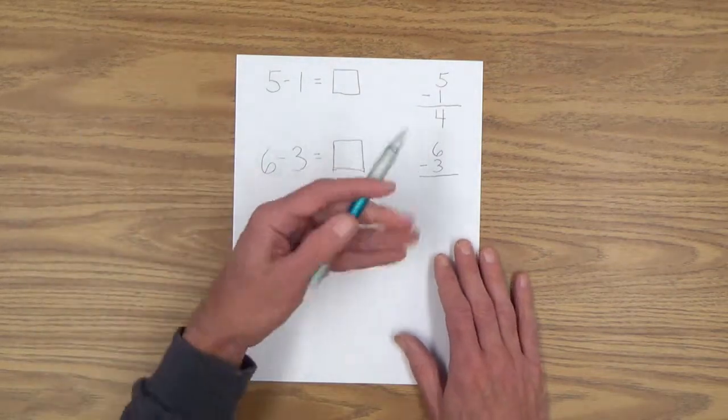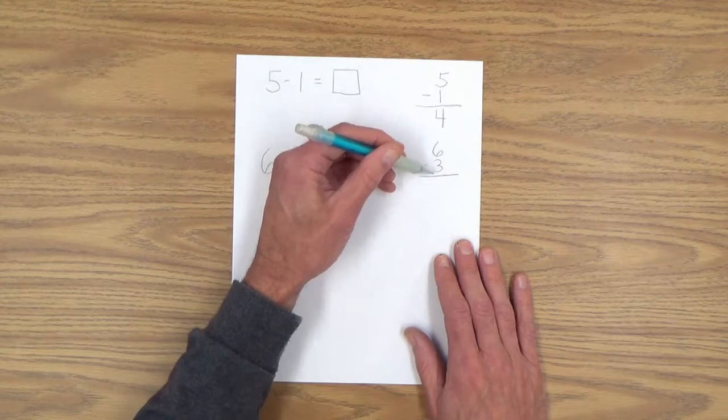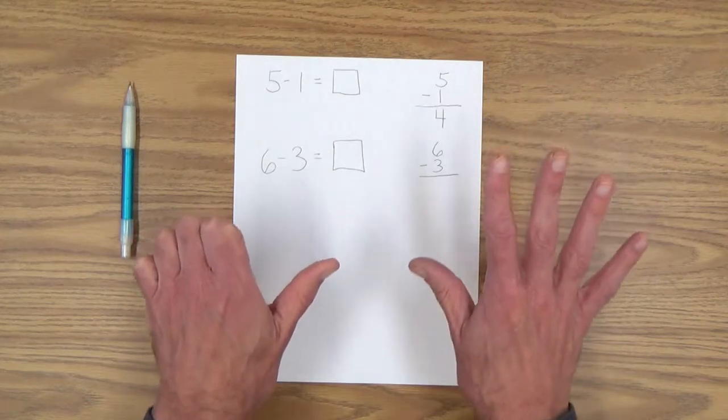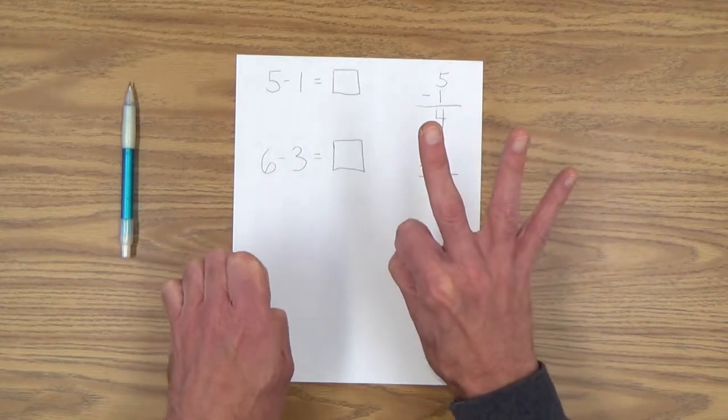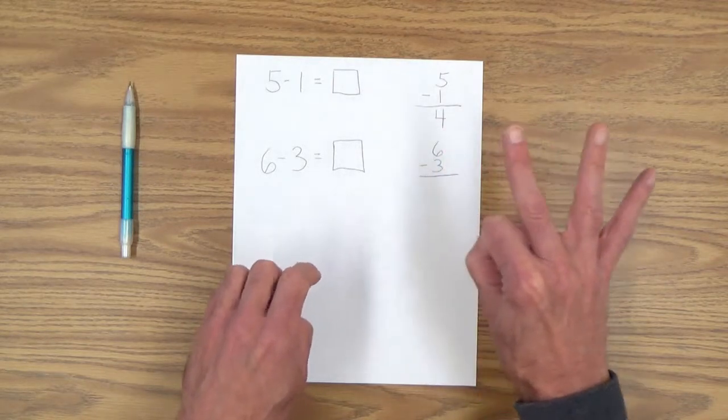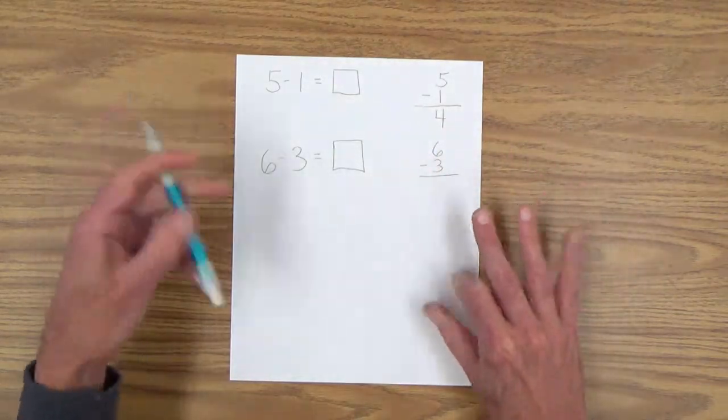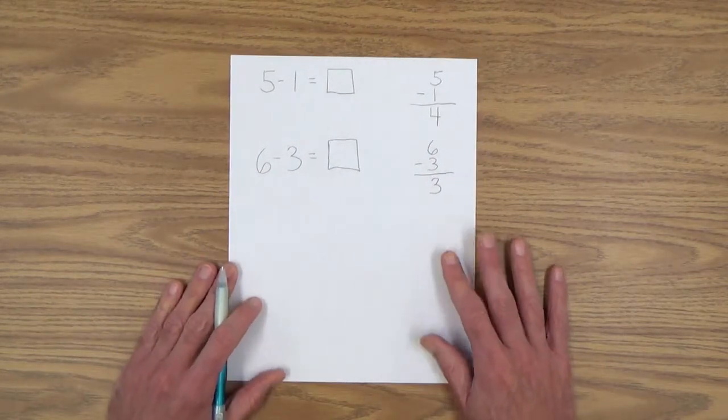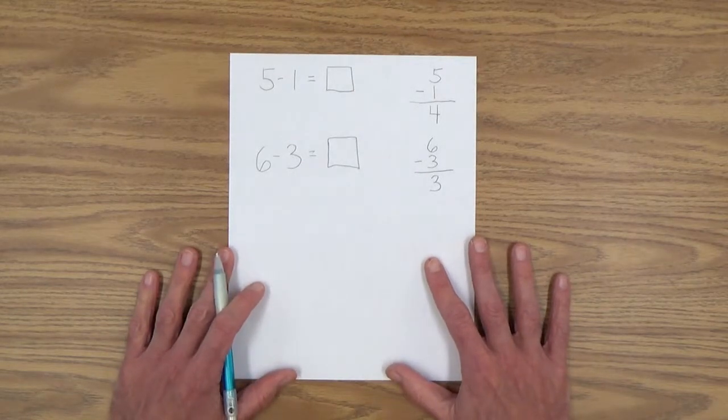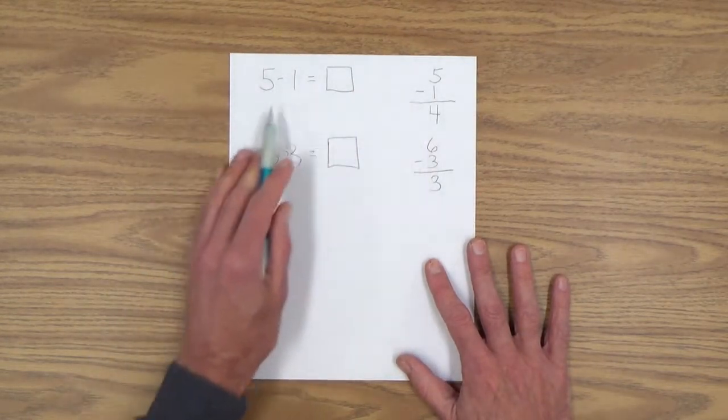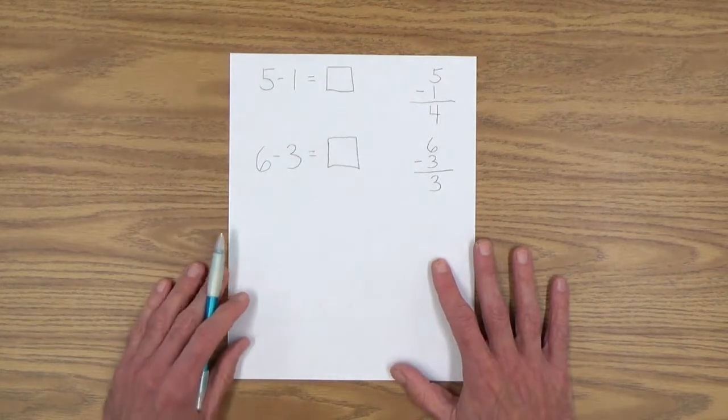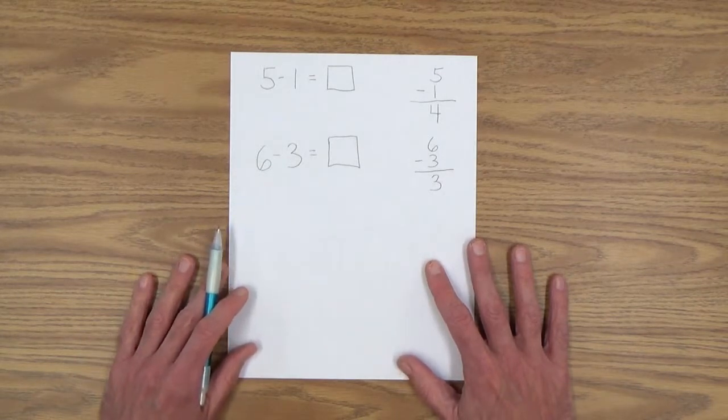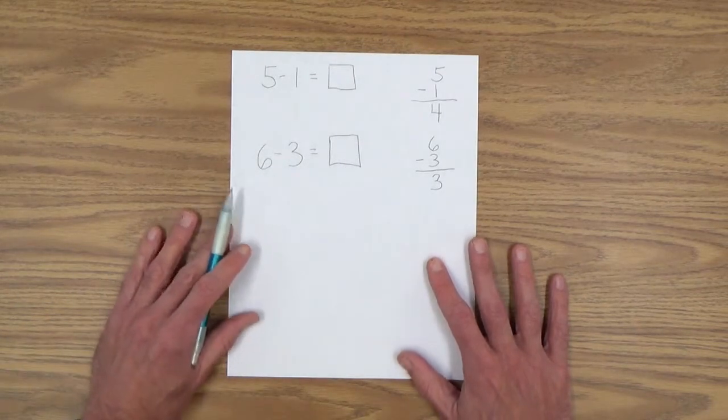How about this one here? Six minus three equals how many? He can get out six fingers and it says to take away three: one, two, three. He can count the remainder: one, two, three. Six minus three equals three. Do a lot of those and write them out both ways until your child is used to seeing them both ways. Use the practice sheets that go along with the lesson here.